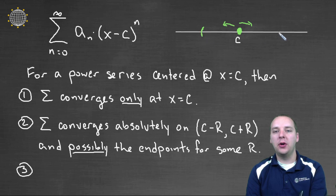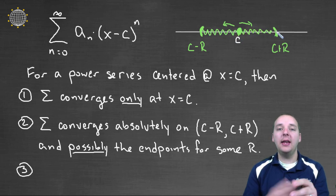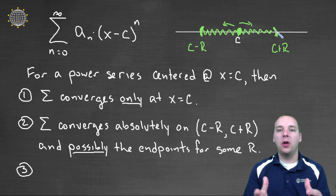And so here, if I just kind of draw a general distance here, this will be like c minus some value, up to c plus some value. And it will converge everywhere on that interval. But once you go beyond that interval, it will no longer converge.